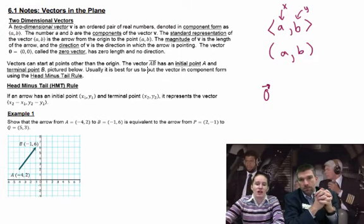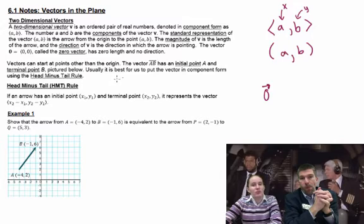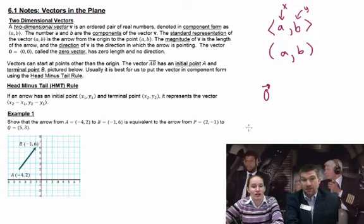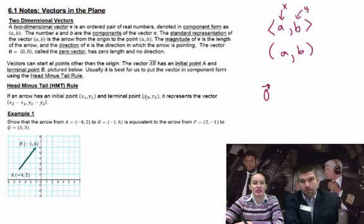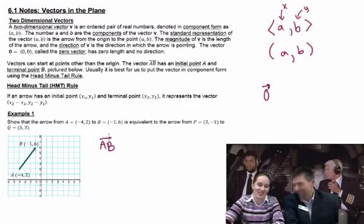Vectors can start at points other than the origin. The vector AB, for example, and that's a case where I've got a little line with an arrow over it, has an initial point A and a terminal point B. So, the thing that comes first is the initial point. The thing that comes second is the terminal point. Start and stop. And it's pictured here below. And then, usually it's best for us to put the vector in component form using the head minus tail rule, which is right here. And basically, head minus tail rule, if I may be so bold, is slope. It's where you stop minus where you start for each coordinate. It is, like slope, except you're not dividing them.